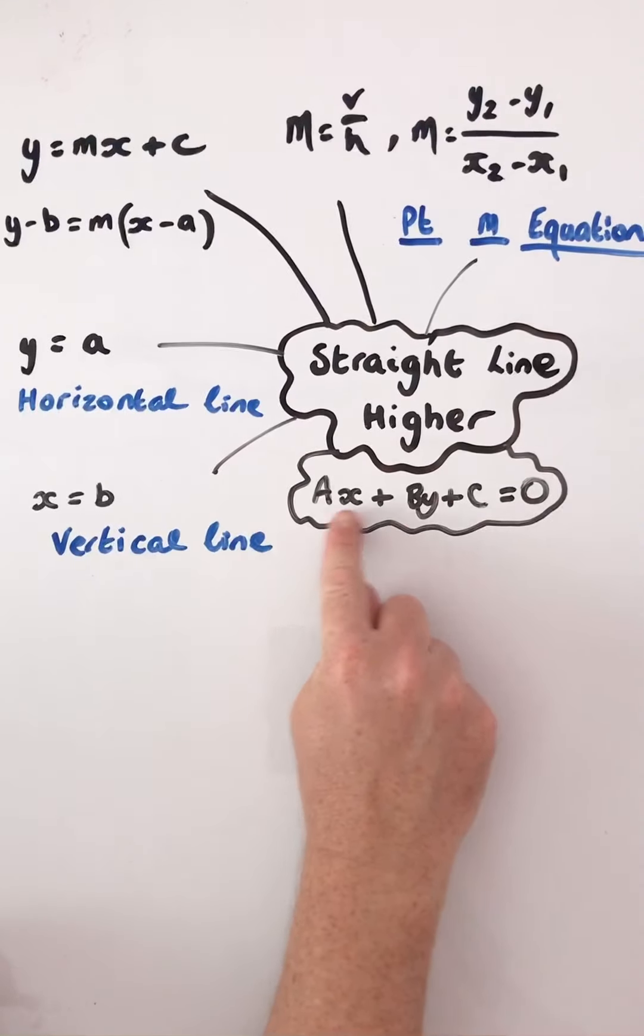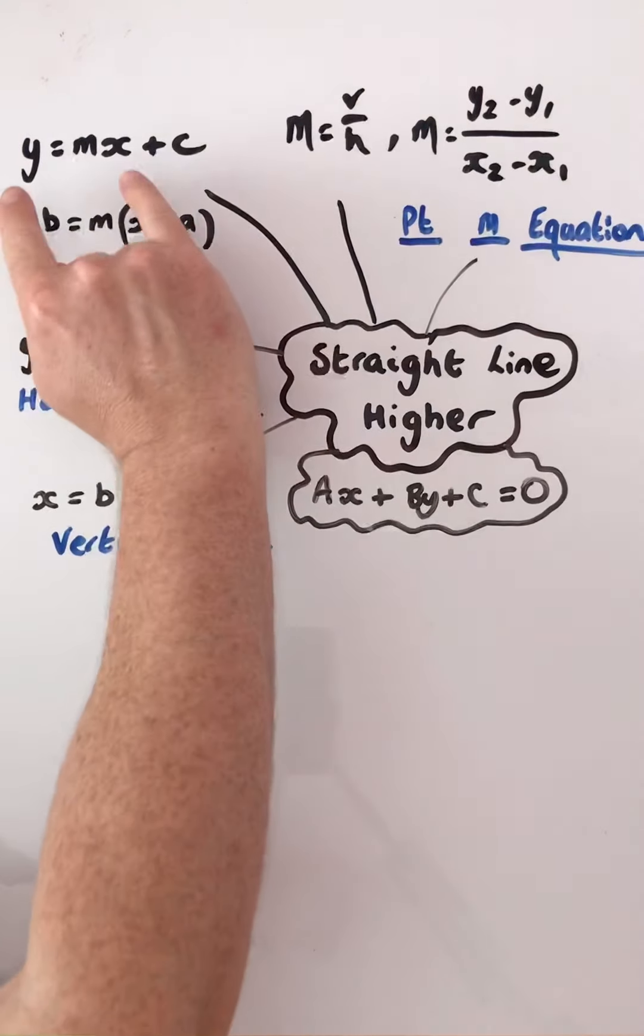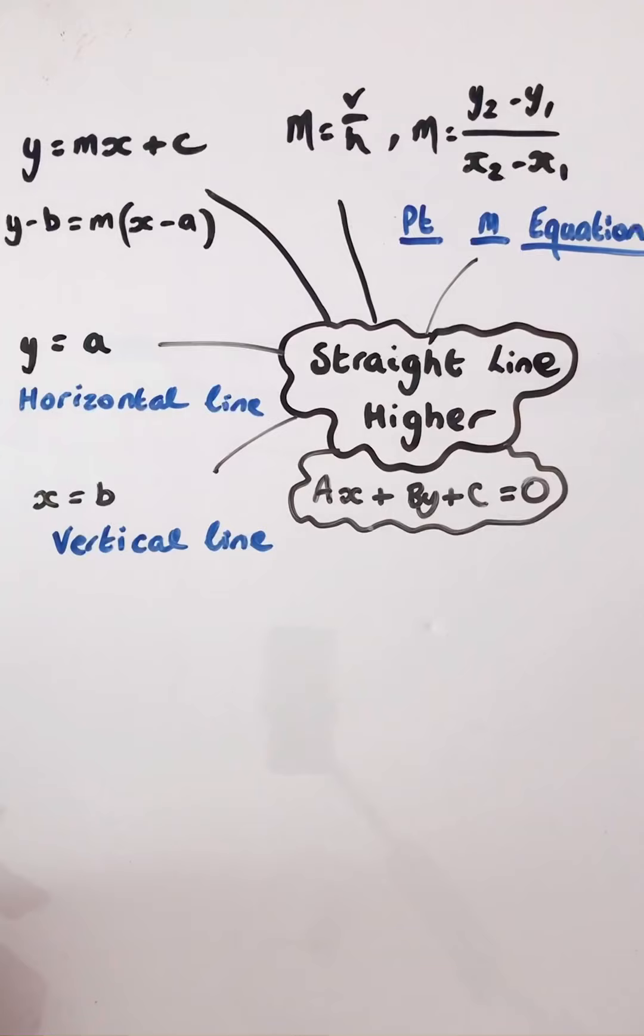Our general equation of a straight line, ax plus by plus c equals zero, and we also know that this is a general equation of a straight line as well, y equals mx plus c.